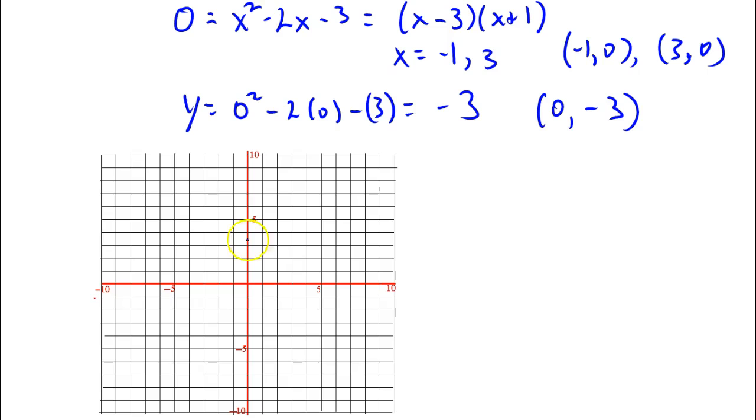From those three points, I can get a pretty good picture of what my graph is going to look like. I've got an x-intercept at negative 1, 0. I've got another one at 3, 0. And I've got one at 0, negative 3. And so this is a parabola that's doing something like that, more or less. Pretty rough picture, but pretty close.